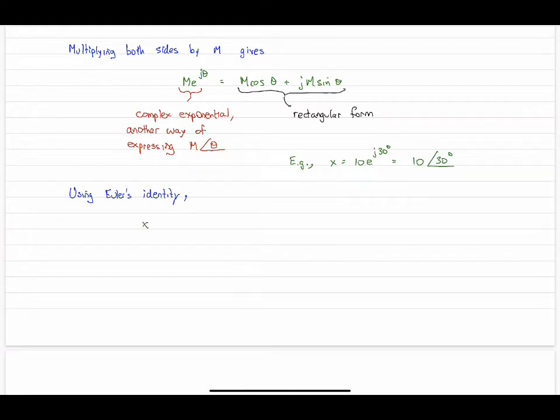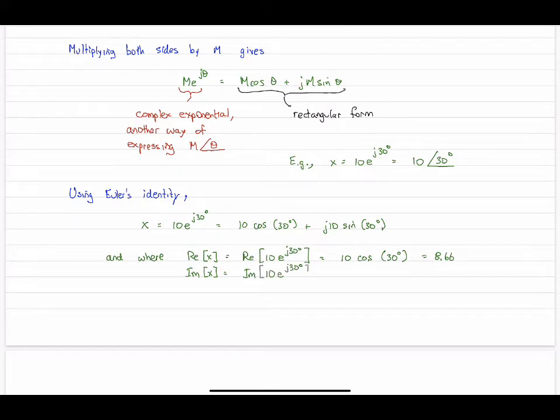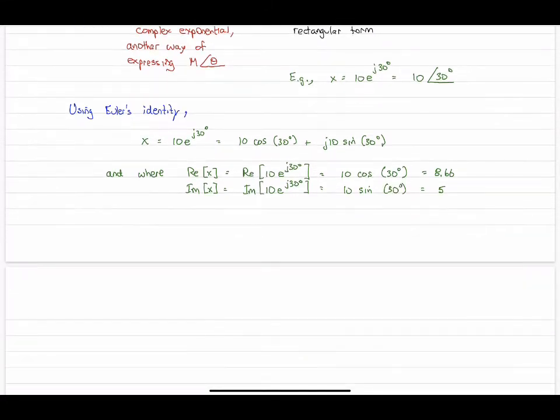Let's use Euler's identity to do what we need it to do. Once again, x equals 10e^(j30°), which works out to 10 cos 30° plus j 10 sin 30° in rectangular coordinates. Expressing the real part of x is obviously the cosine part, which evaluates to 8.66. The imaginary part is the sine component, which works out to 5. So the overall complex exponential value is 8.66 plus j5.